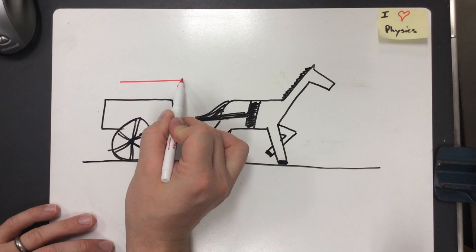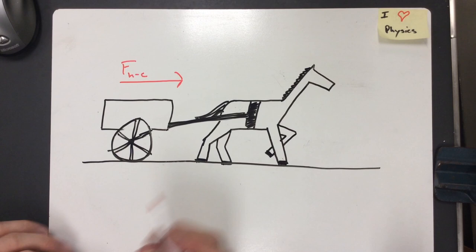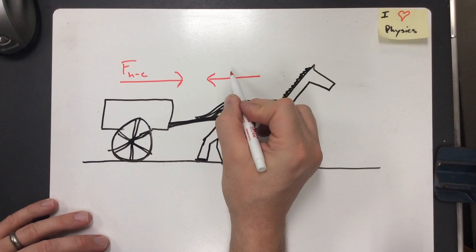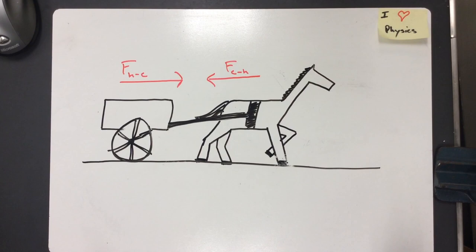So at first glance, it would seem like this: that when the horse pulls on the cart, and we would illustrate that here with the force vector, and we'll say force horse on cart, that's going to be canceled out by the equal and opposite force of the cart pulling back on the horse.